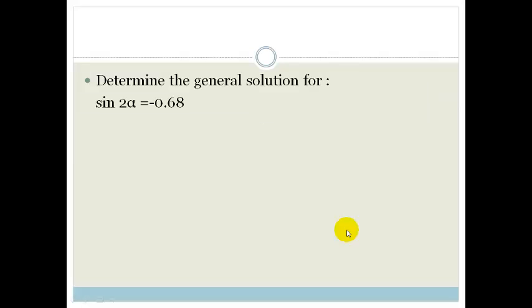What does that mean? That means we can find an answer for the solution and then give you an expression such that it doesn't matter how many times we go around the CAST diagram — you will get the right answer. So let's look at this. We've got sin(2α) = -0.68. To make this easier, let's pretend that is one whole angle instead of 2α. We're going to let theta equal 2α.